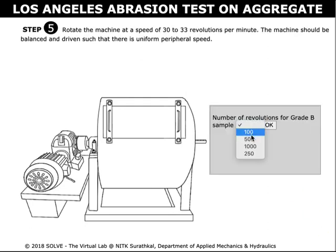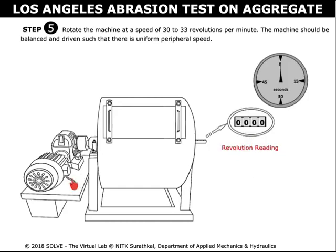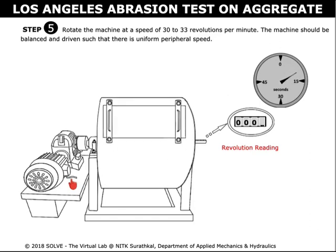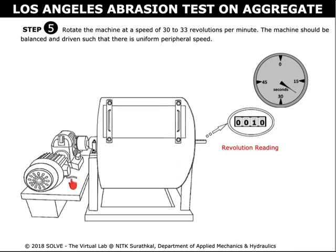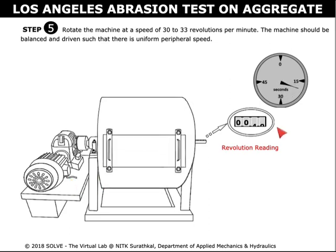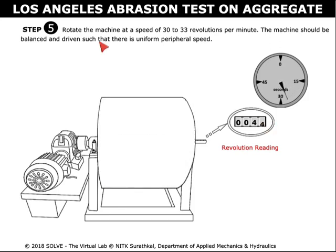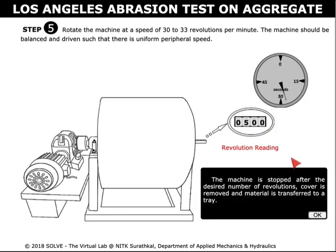Select the correct answer for the pop-up question to proceed to the next step. Click here to rotate the machine at a speed of 30 to 33 revolutions per minute. The machine should be balanced and driven such that there is uniform peripheral speed. Read the instructions carefully and note the revolution count and the time taken.